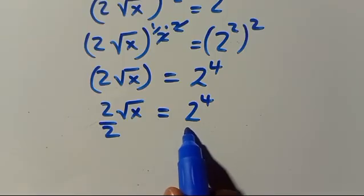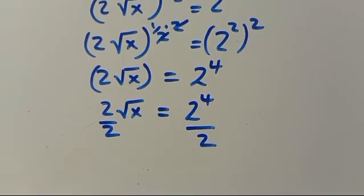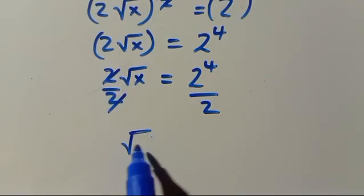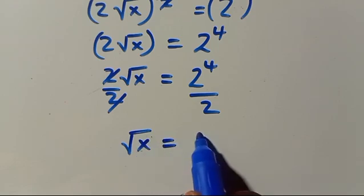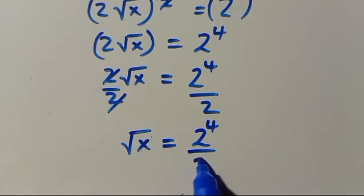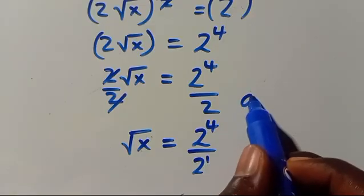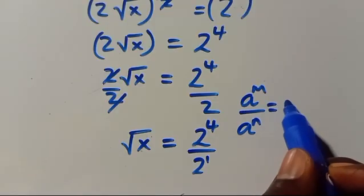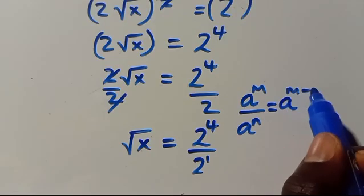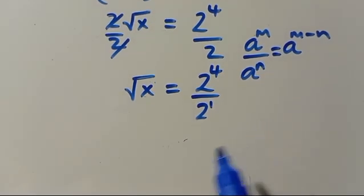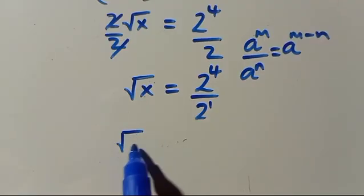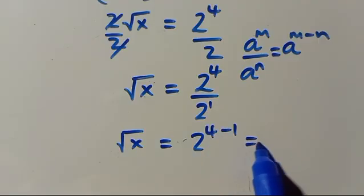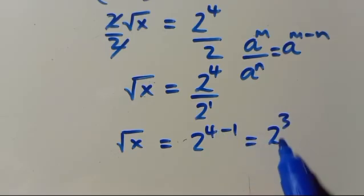Dividing both sides by 2: root x equals 2⁴ over 2¹. Using the law that a^m / a^n = a^(m−n), we get √x = 2^(4−1) = 2³.